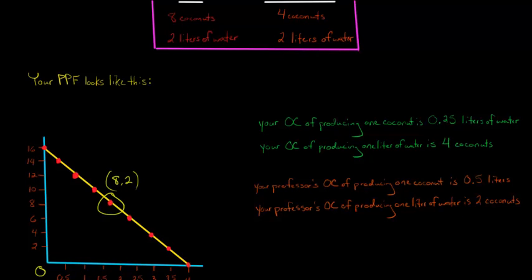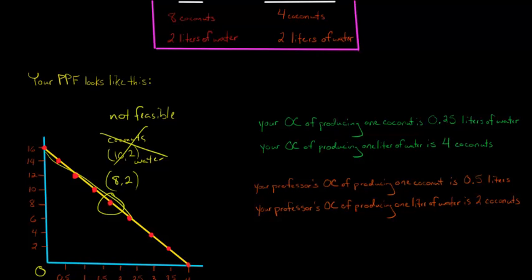Being efficient in production means that you cannot, given your current level of resources, produce at a point like (10, 2) — ten coconuts and two liters of water. You can't currently produce that; this is not feasible at your current level of resources. But let's think about the following: you might be able to trade with your professor and actually get to that point (10, 2). How can you consume at a point beyond your PPF? That's where the idea of comparative advantage becomes important.